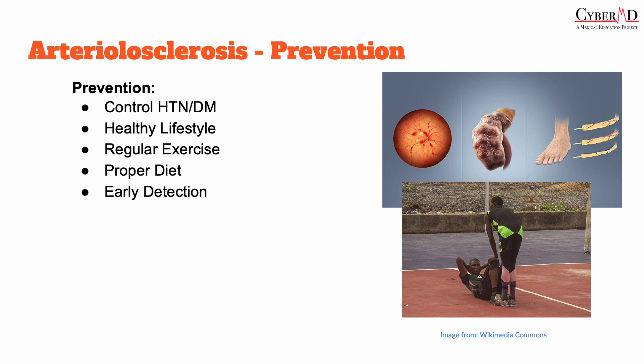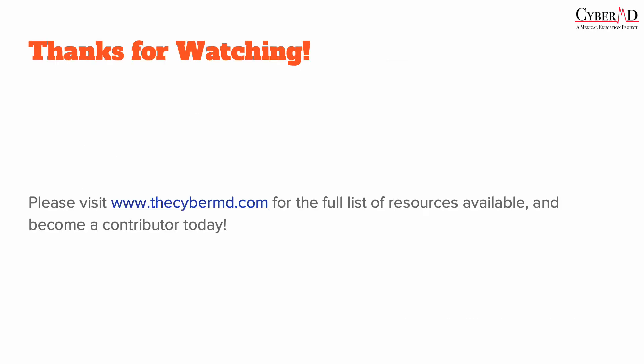Early detection and treatment of hypertension and diabetes can also reduce the risk of developing arteriolosclerosis. It's important to remember that arteriolosclerosis affects the small arterioles and can be divided into hyaline and hyperplastic subtypes. Hyaline arteriolosclerosis is associated with long-standing benign hypertension or diabetes, while hyperplastic arteriolosclerosis is associated with malignant hypertension. Both types can result in reduced vessel caliber with end-organ ischemia, potentially leading to chronic or acute renal failure.